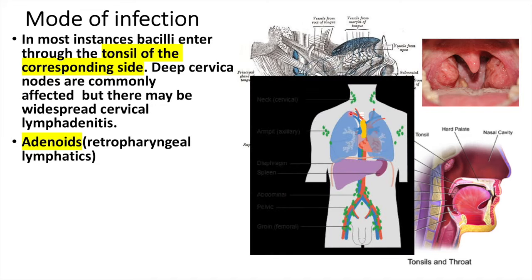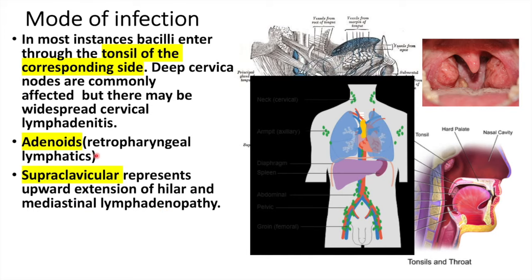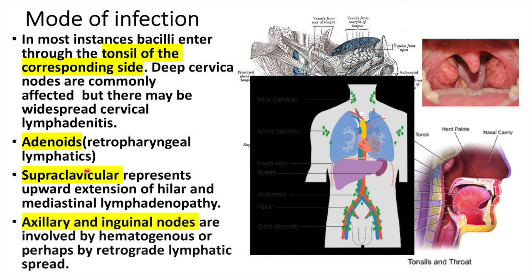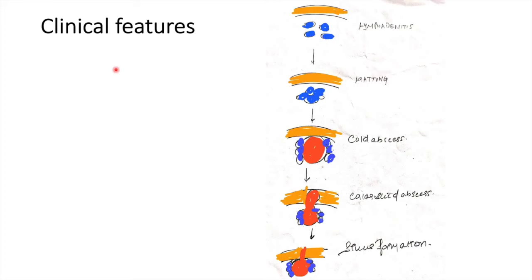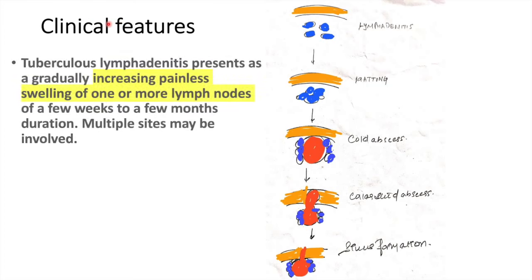More rarely, the infection can spread from the apex of the lungs towards the supraclavicular lymph nodes by penetrating the supraplural membrane, causing enlargement of the supraclavicular lymph nodes. The axillary and inguinal lymph nodes are commonly involved through hematogenous or retrograde lymphatic spread.